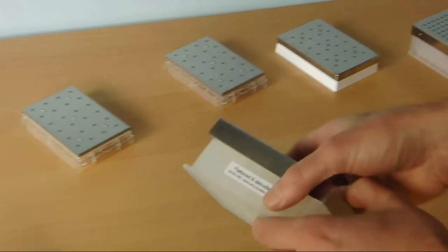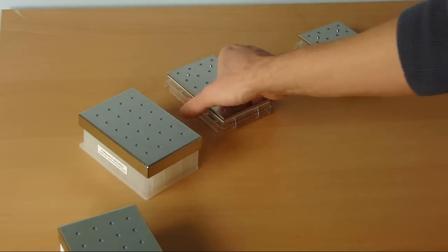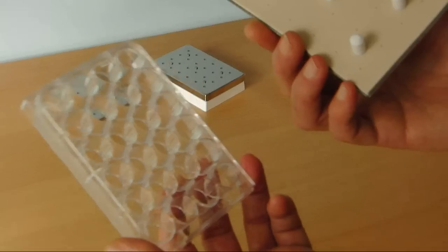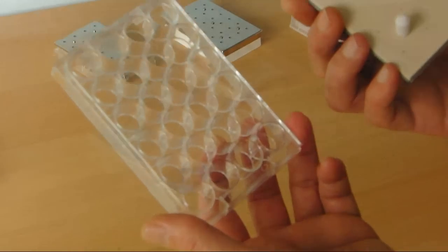We also have special covers for Corning 24 round well plates that allow culture volumes of up to 1 ml, both in a normal and in a low evaporation version.